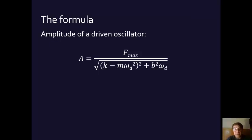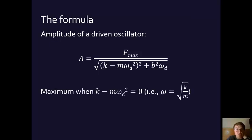F_max is the external force that we're applying. k is the constant of the oscillator, spring constant or whatever. m is the mass, omega_d is the driving force, that is, the driving frequency that we're applying to it. b is the damping constant. So, those are all the players that we've seen in the previous video in this one.